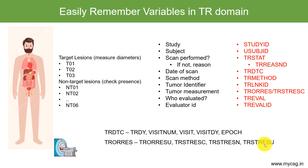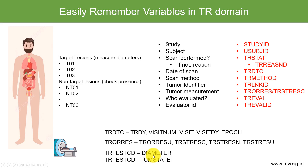Now we will see some of the test codes used to store information for these two tumor types. For diameter, we may use the test code DIAMETER — there are other variants like LDIAM or SDIAM — but we use the generic DIAMETER to store results associated with target lesions. For non-target lesions, we use the test code value TUMSTATE (tumor state). This is how you can easily remember the variables in the TR domain. Thank you for watching and keep learning.